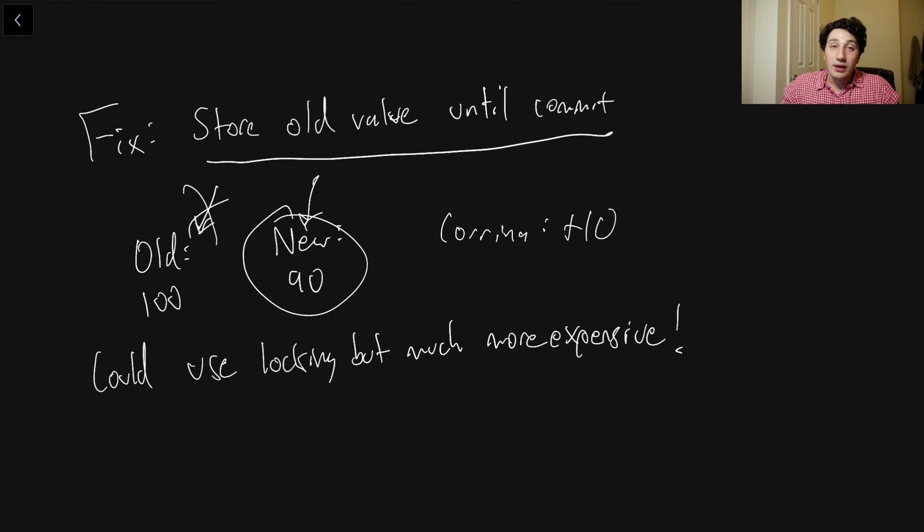Then we switch that pointer over to new. And now guess what? We're reading from this value. So this is how we're able to do this. We just have to store an extra value. And this way, even though we're incurring a little bit more storage overhead, we are greatly decreasing the amount of locks that we have to wait on and speeding up our database significantly.